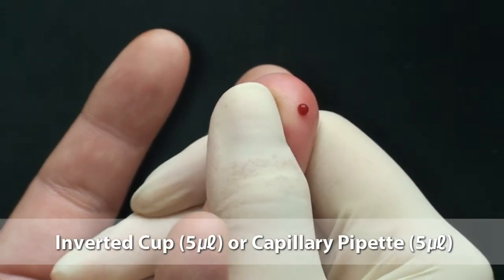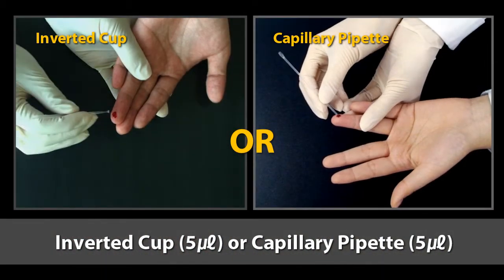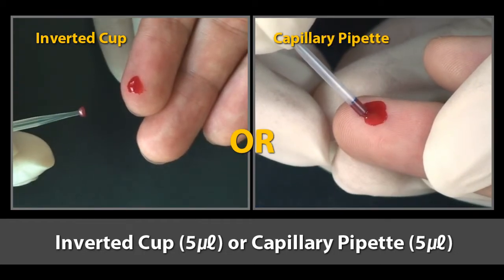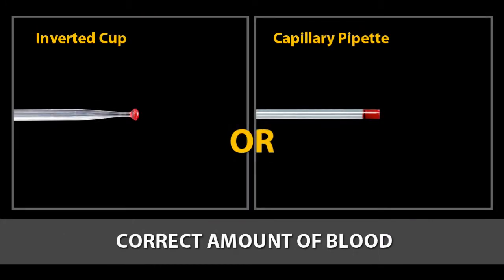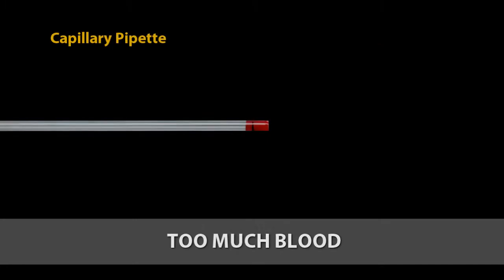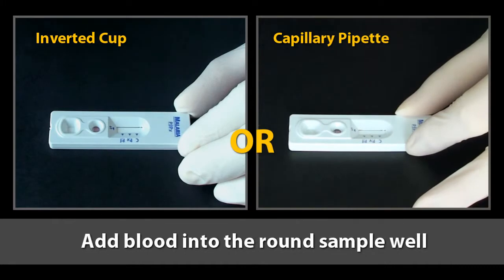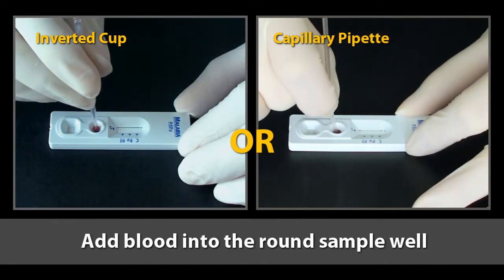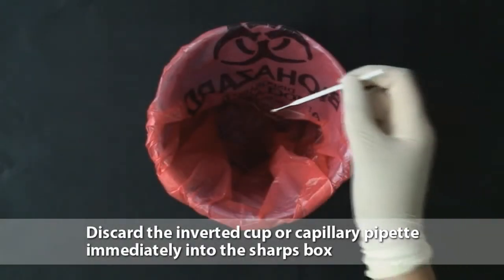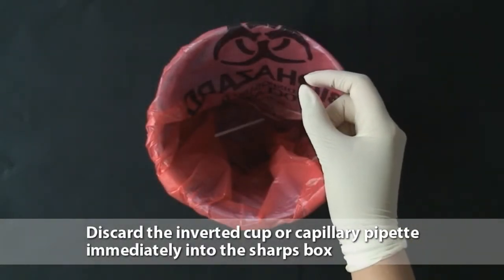As the blood bubbles up, take a disposable specimen cup and dip the circular end of the inverted cup into the blood specimen. The amount of blood collection is critical — this is the correct amount of blood; too little or too much is incorrect. Add five microliters of drawn blood into the round sample well, touching the sample pad. Discard the inverted cup or capillary pipette immediately in the sharps box.